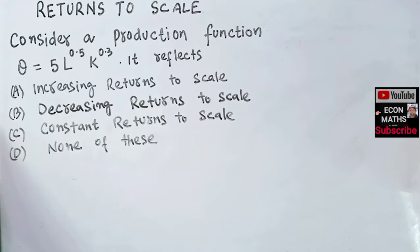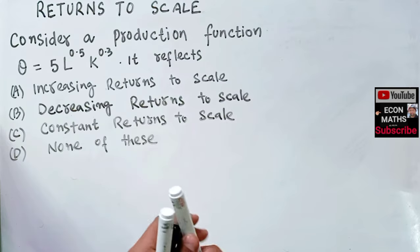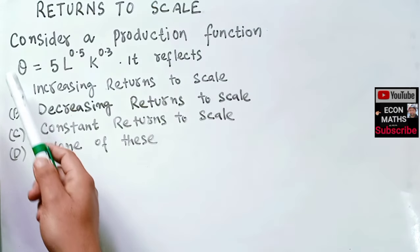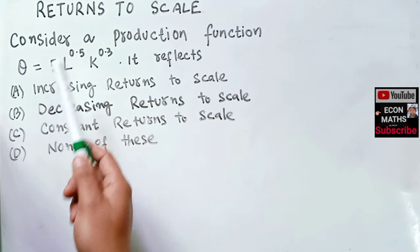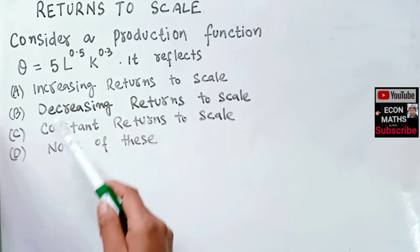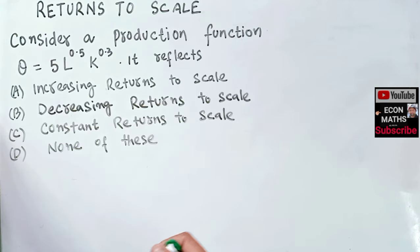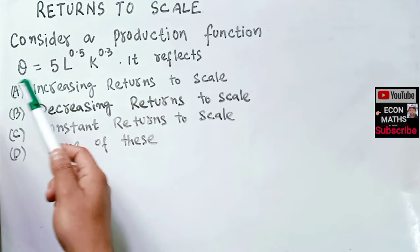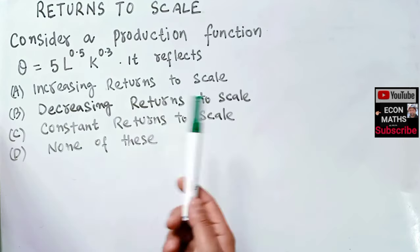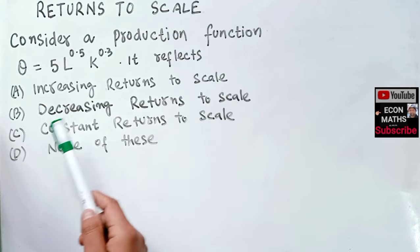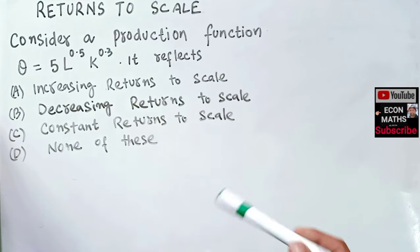In this video we will learn how to find the returns to scale from a given production function. Consider a production function Q = 5 * L^0.5 * K^0.3, where Q is the output, L denotes the units of labor, and K denotes the units of capital. We have to find out whether this production function reflects increasing, decreasing, or constant returns to scale.